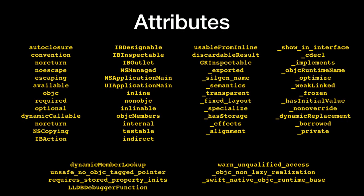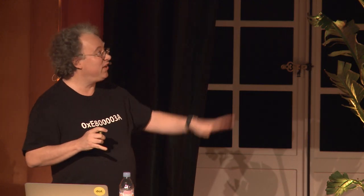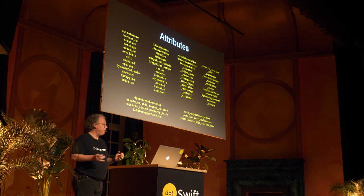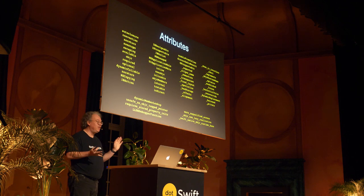Swift has about 50 or 60 attributes at your disposal. Some of these are documented, many are not — especially the ones with the underscores. Standard disclaimer: don't use undocumented features in production code. But for your own fun, your own tests, to show off to your local CocoaHeads — like, hey, I just discovered @_underscoreFixedLayout, let's see what it does — that stuff is fun.